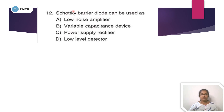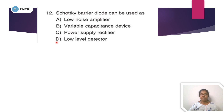First question is: Schottky barrier diode can be used as? Option A: low noise amplifier. Option B: variable capacitance device. Option C: power supply rectifier. Option D: low level detector.